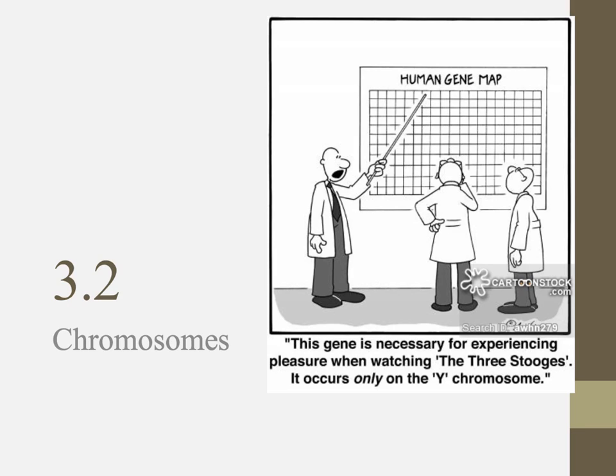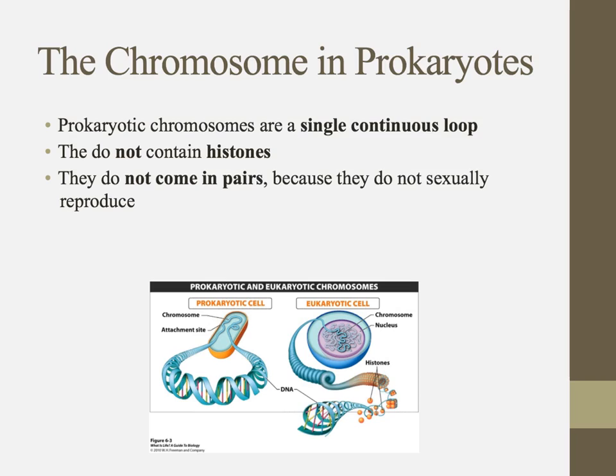This video is for Chapter 3.2, all about chromosomes. We know that chromosomes house DNA, and DNA is ubiquitous. All types of cells have DNA, including both eukaryotes and prokaryotes. But the chromosomes formed from that DNA are a little bit different in both types of cells.